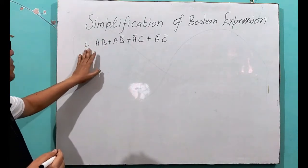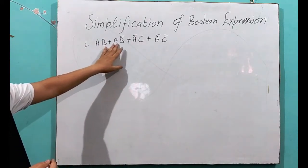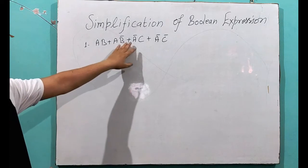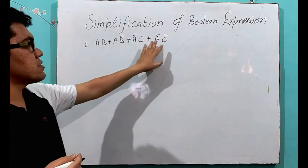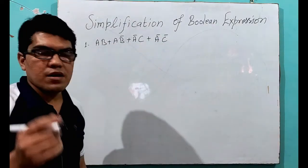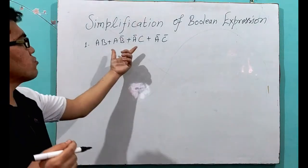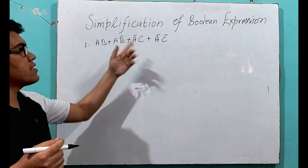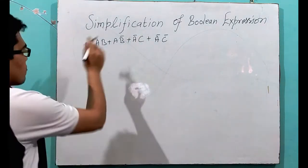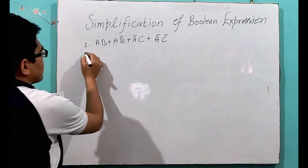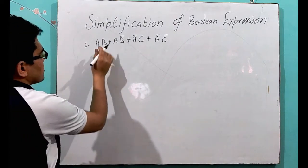Now, an expression is given: AB plus AB̄ plus ĀC plus ĀC̄. What we have to do is simplify this expression. It is a very simple expression. So, let us solve this.